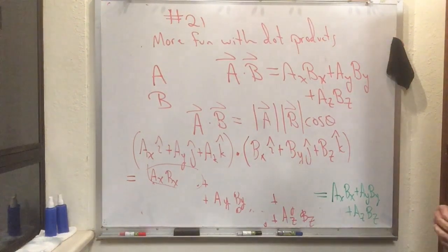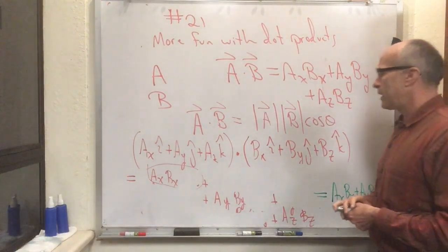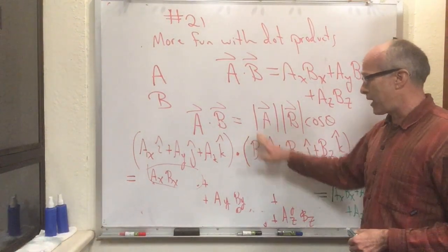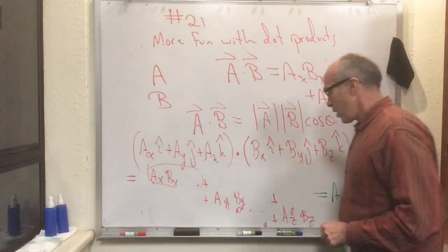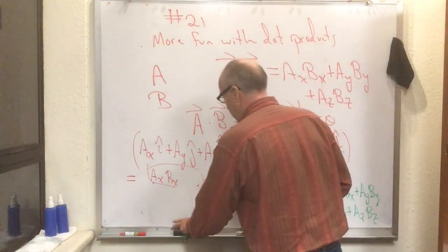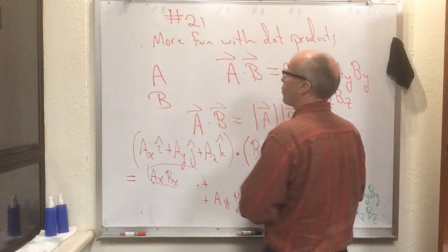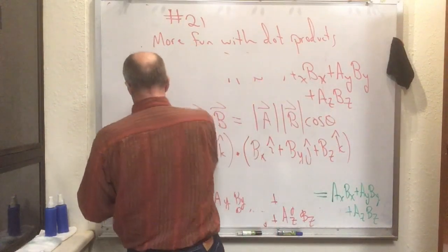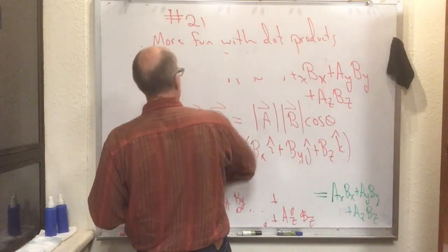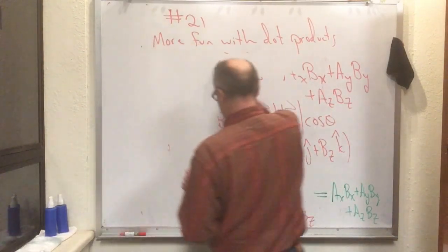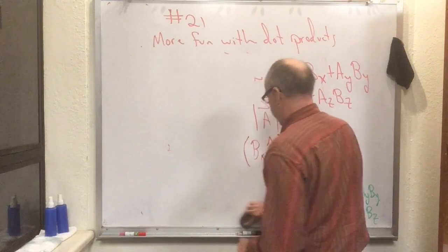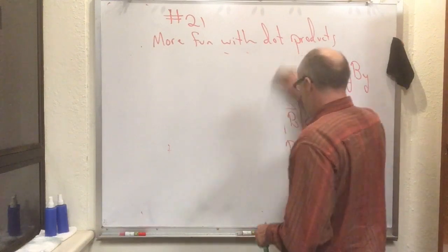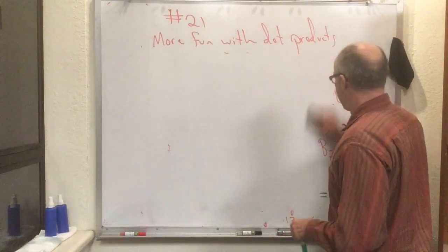So look at what we're left with: if you believe this formula and write a vector in terms of its components, we've shown that a dot b equals ax·bx plus ay·by plus az·bz. So you can believe that these two ways of writing dot products are equivalent. Now I want to show you something else we can do with that.